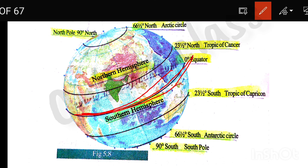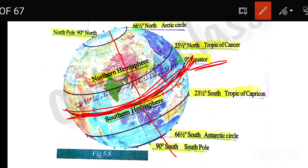The equator is zero degrees. The equator is the longest latitude line. This one divides the northern hemisphere and the southern hemisphere.